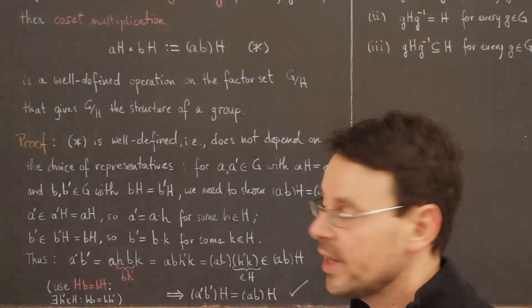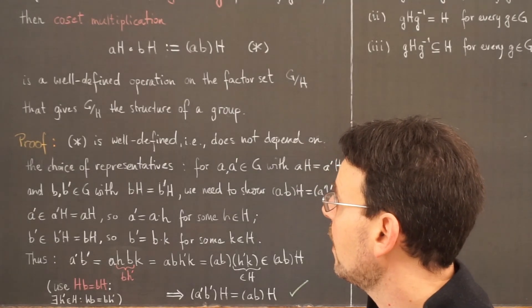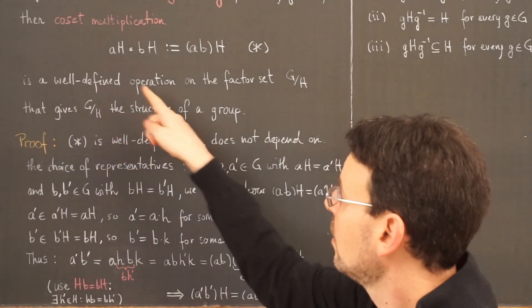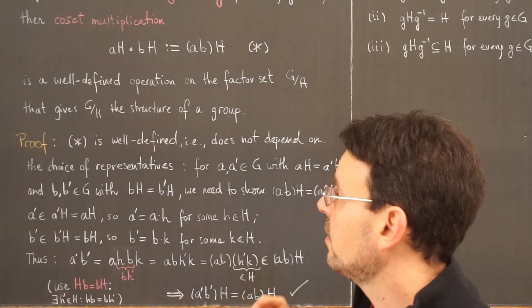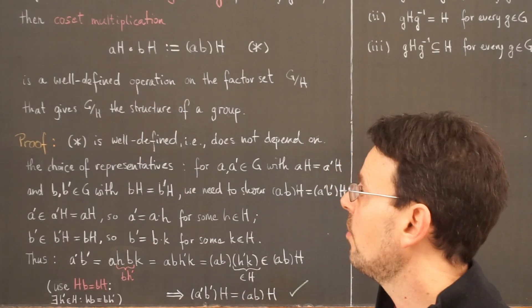This is the content of proposition 20. The condition — that left and right cosets be the same for every element of the group — is exactly what makes the factor set into a group. Let's take a careful look at the proof, the hardest part being well-definedness of this operation.